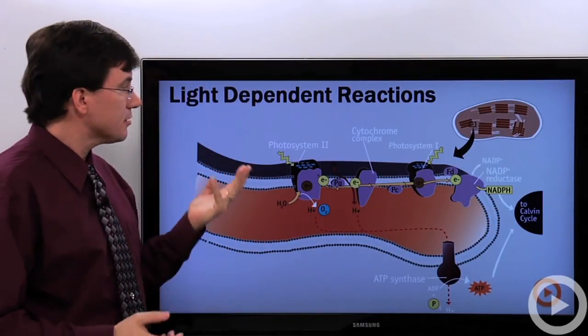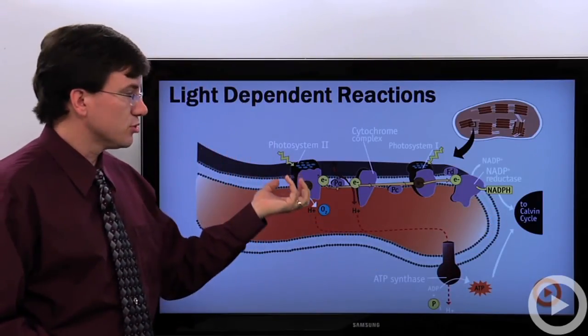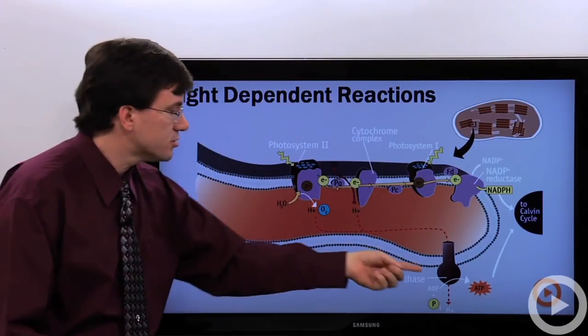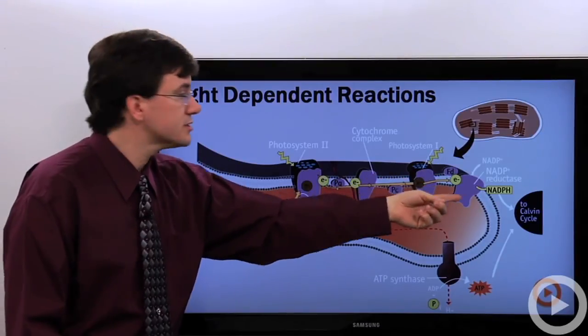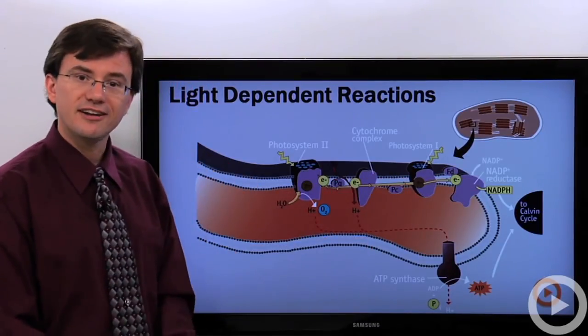And there you have it, the light reactions. The absorption of light creates this chemiosmotic gradient so that you can create ATP, and the absorption of light creates high-energy electrons that hop a ride to the Calvin cycle on NADPH.